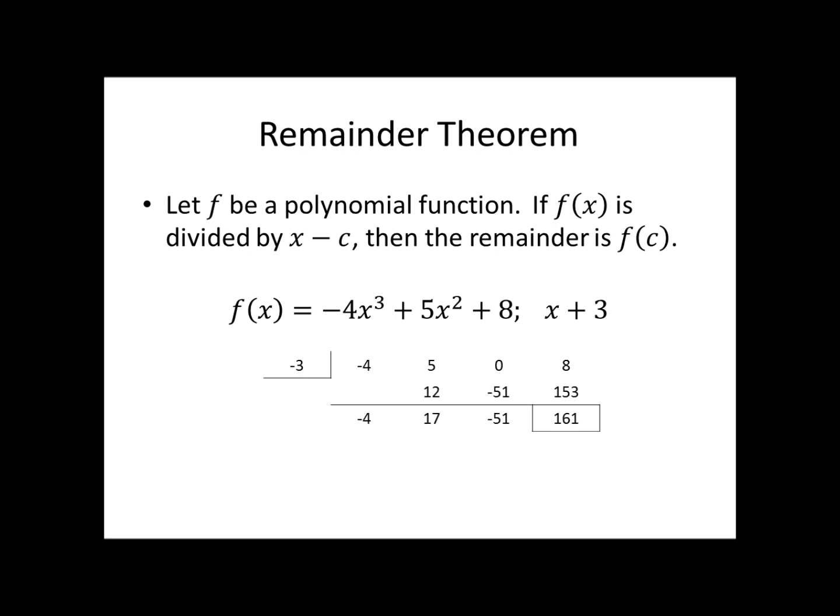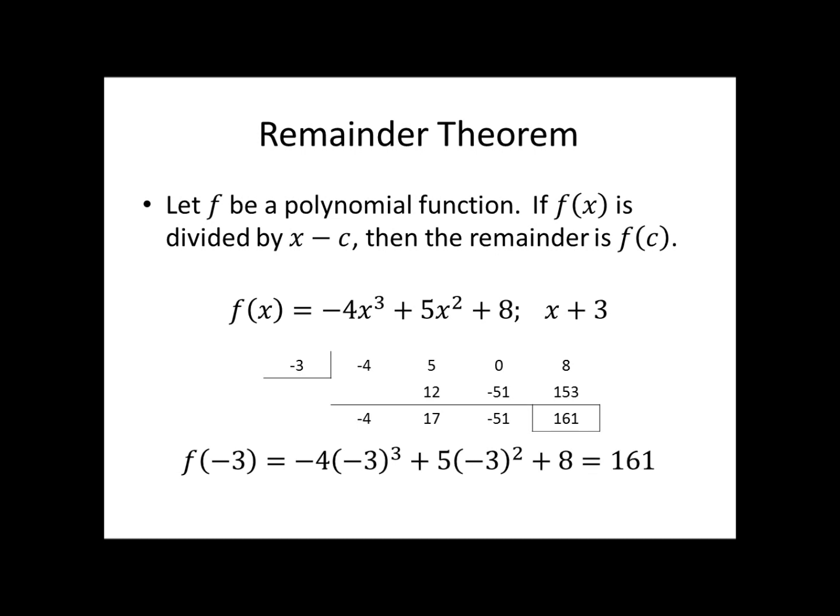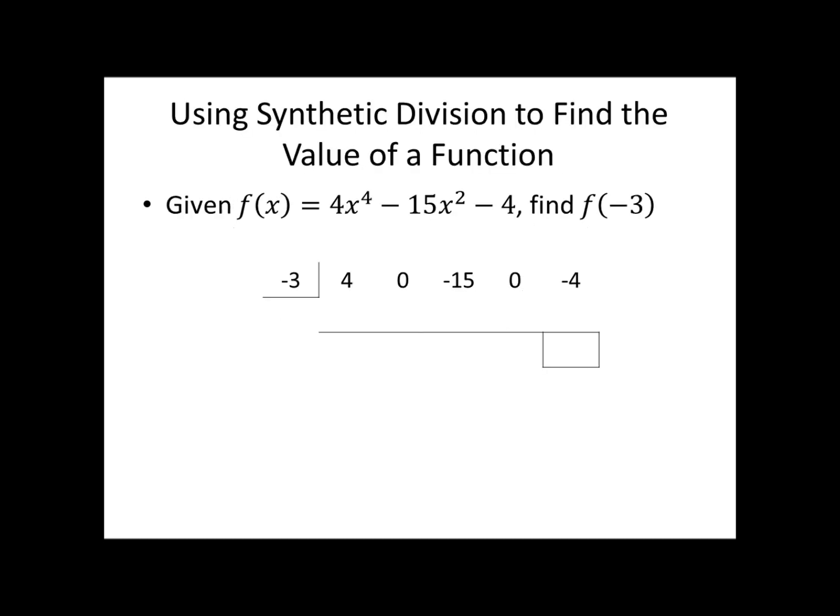We're going to run the synthetic division process because it's a whole lot easier than long division. We drop the negative 4 straight down, multiply and add all the way across, and we see that our remainder is 161. The Remainder Theorem says that if I plug negative 3 into the function, I should also get 161 — which I do. So we can use synthetic division to find the value of a function.